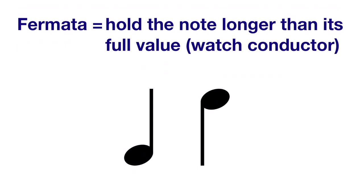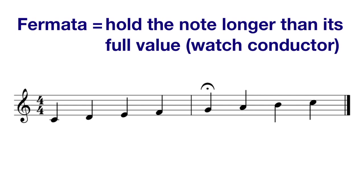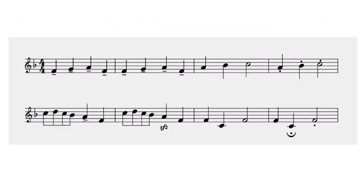In contrast to the tenuto, which means to hold a note for its full value, a fermata means to hold a note longer than its full value. The symbol for a fermata is this little dot with a curvy line, either below or above it. And typically, this is going to require an orchestra or choir to watch the conductor for an indication on when to move on after this note. For example, I might play a scale and stop on the fifth note, hold a fermata here until the conductor says go on.